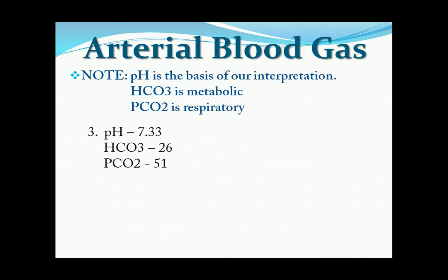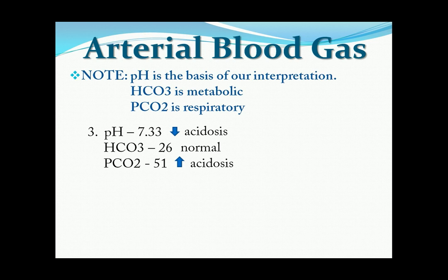Example number 3: pH is 7.33, HCO3 is 26, PCO2 is 51. pH is low, so it is acidosis. HCO3 is within the normal range, while PCO2 is high, so it is acidosis. pH is acidosis and it is the same with the PCO2, because the HCO3 is normal. So the answer is respiratory acidosis.